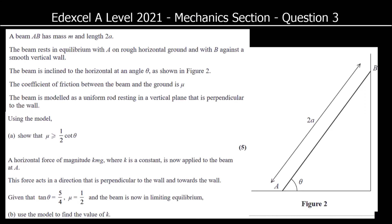A beam AB has mass m and length 2a. The beam rests in equilibrium with A on a rough horizontal ground — so there is friction — and B against a smooth vertical wall, so no friction. The beam is inclined to the horizontal at angle theta as shown in figure 2.